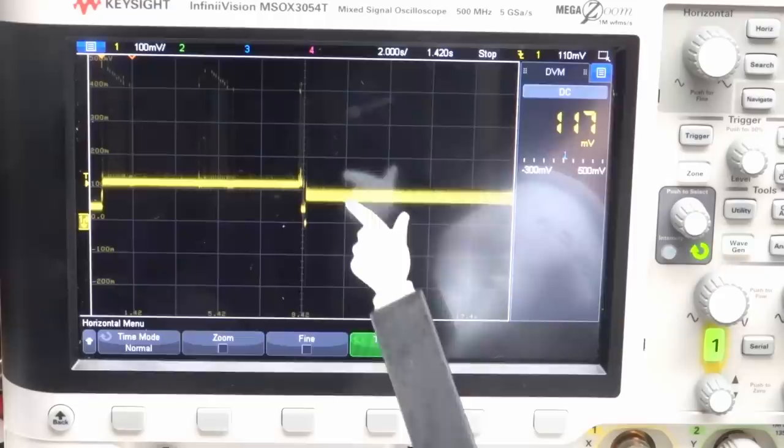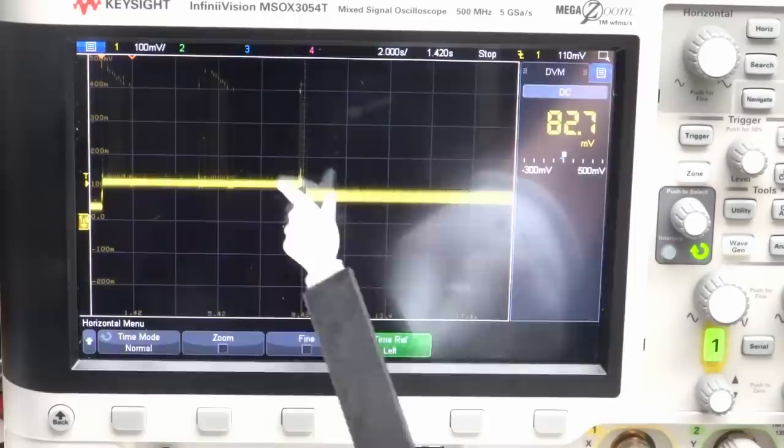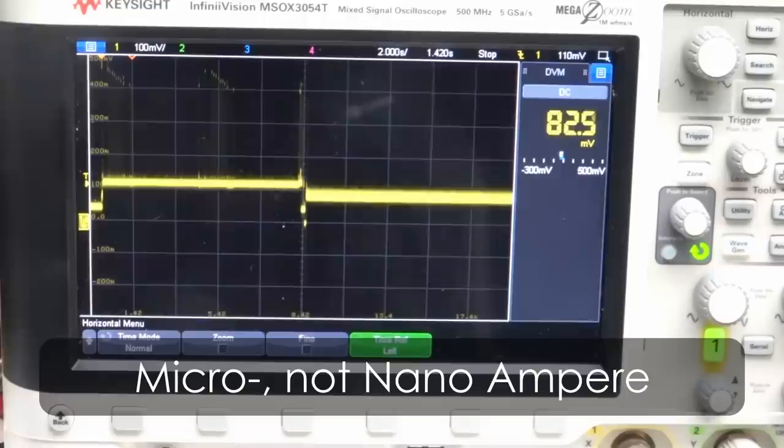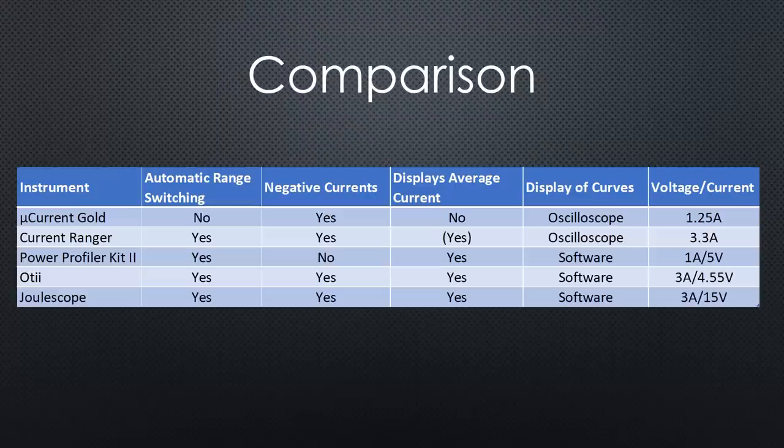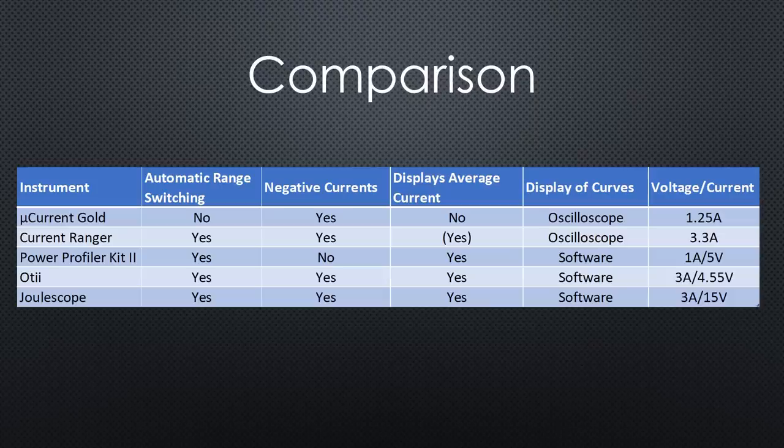Because its auto-ranging function changes the measuring ranges as soon as deep sleep begins. So, this part of the curve is in mA and this one in nanoA. There is no indication in the oscilloscope. So, you have to know what you do. In addition, it is more expensive than the Power Profiler Kit.